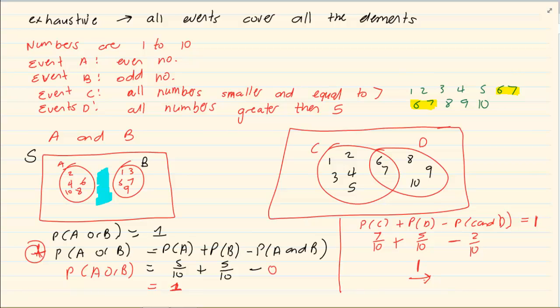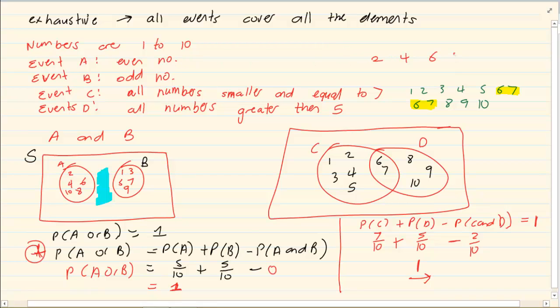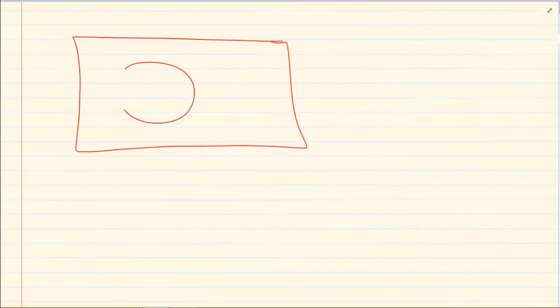Let's do one more related to the same thing. Now I am going to take event A and I am going to take event D. So it's all the even numbers and all the numbers greater than 5. Now at event A we can see it's going to be 2, 4, 6, 8, 10. Again we have things that overlap. We have the 6 that overlaps. We have the 8 that overlaps. And we have the 10 that overlaps.